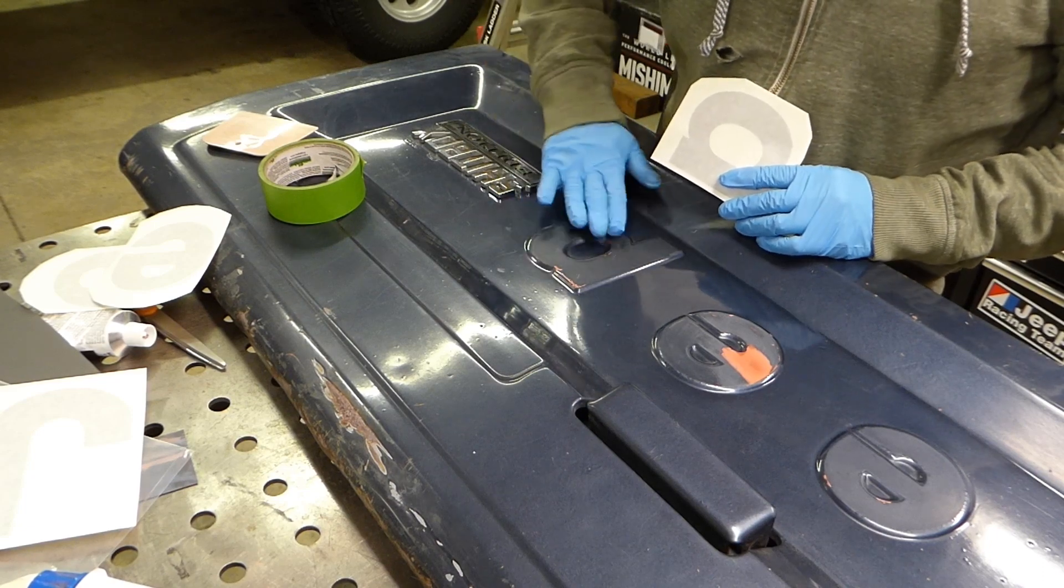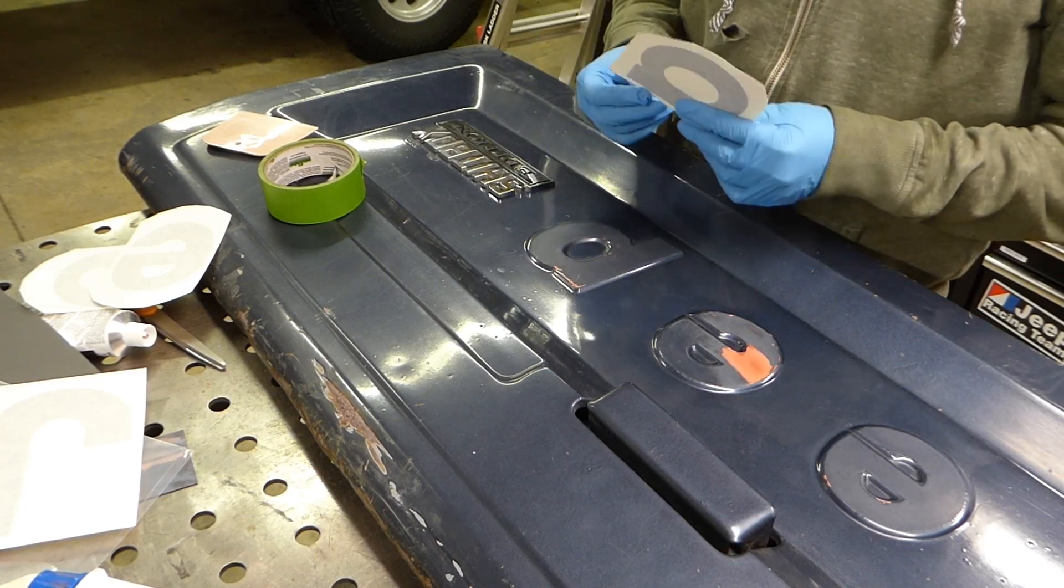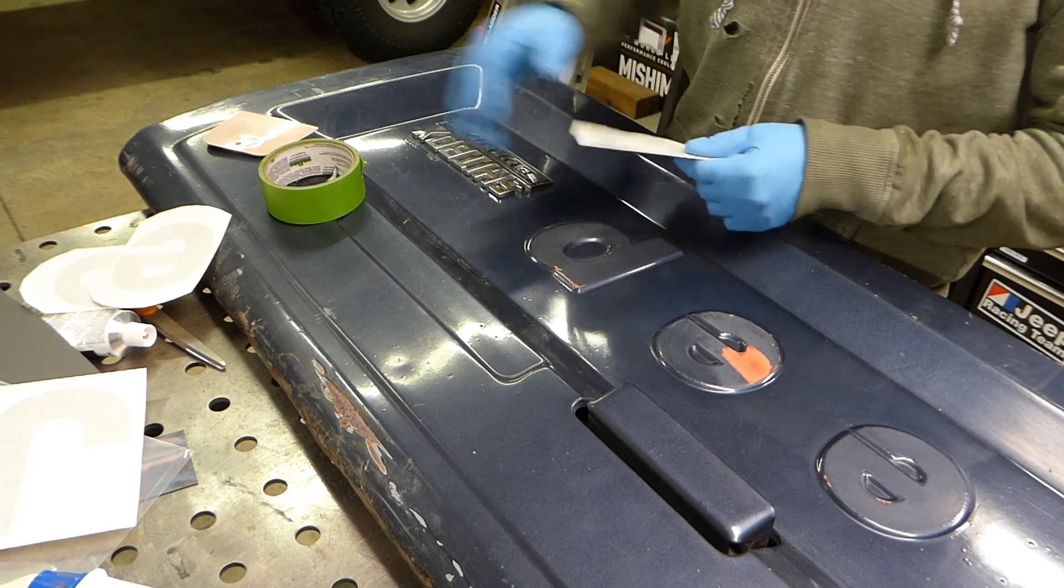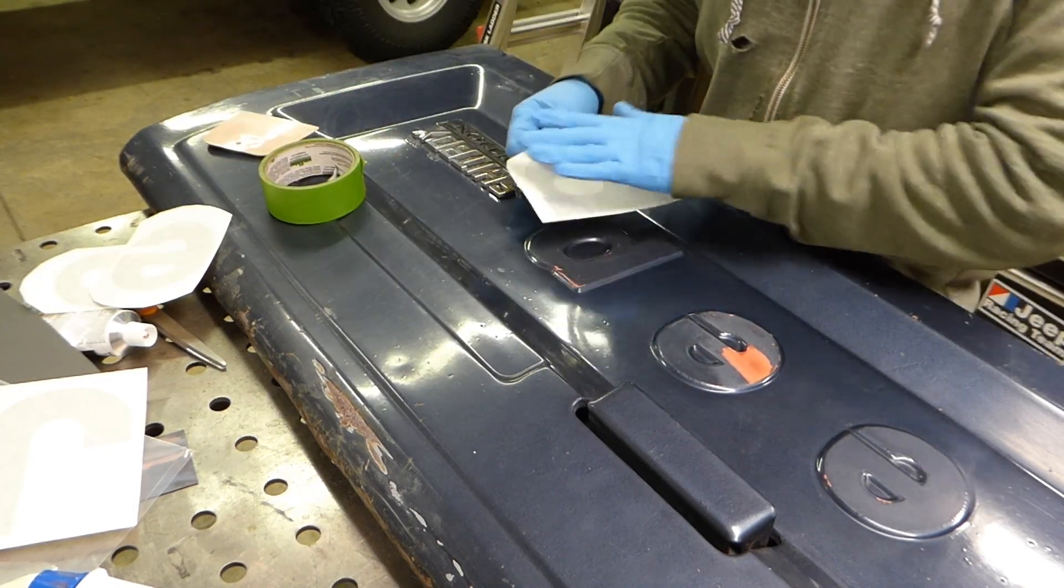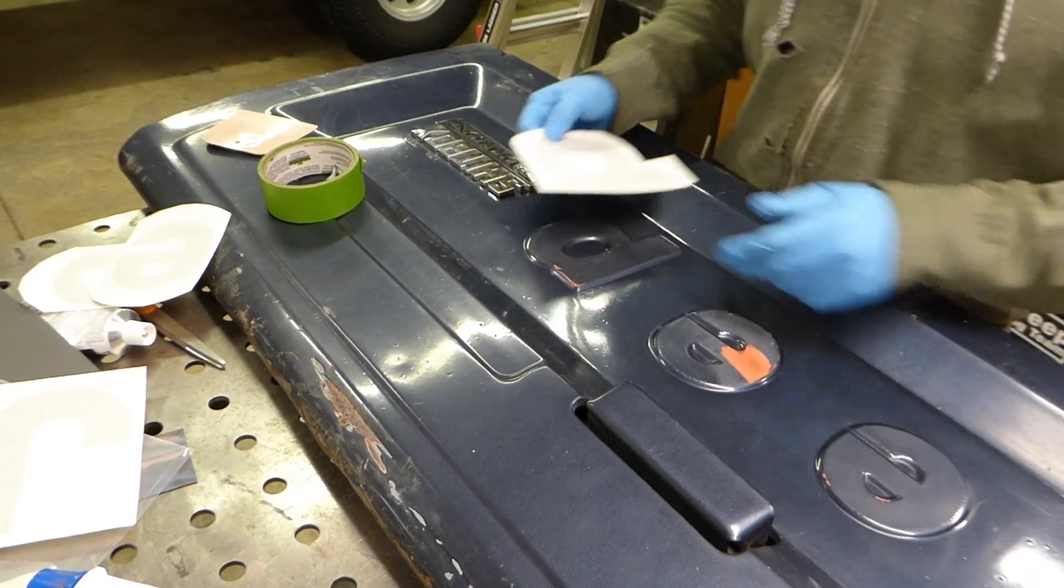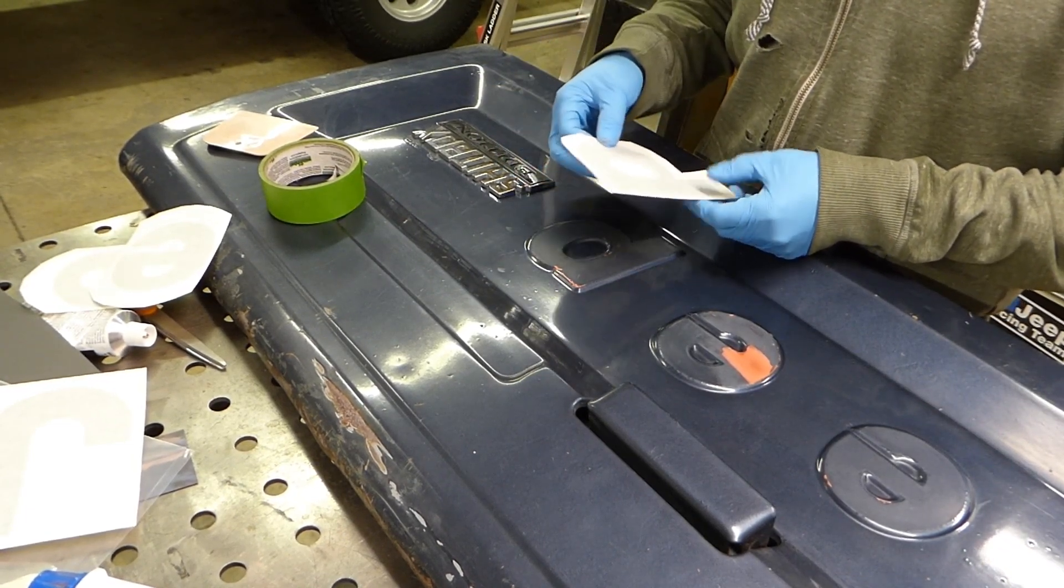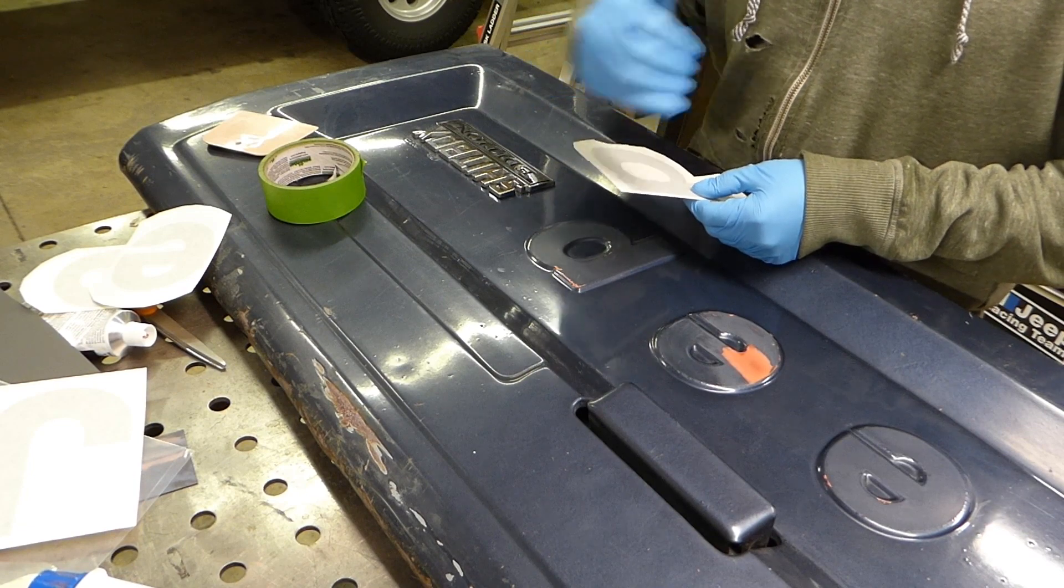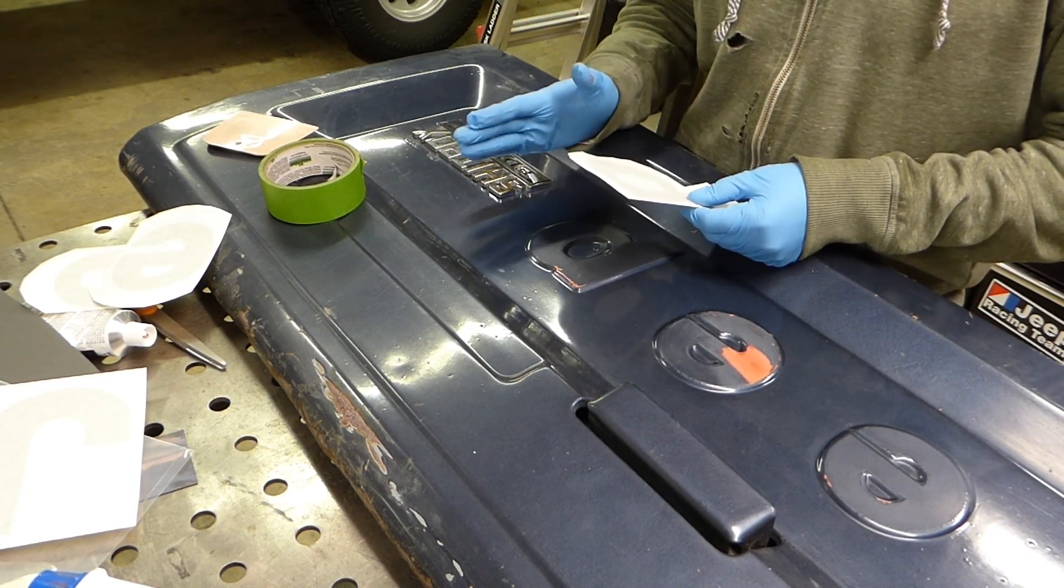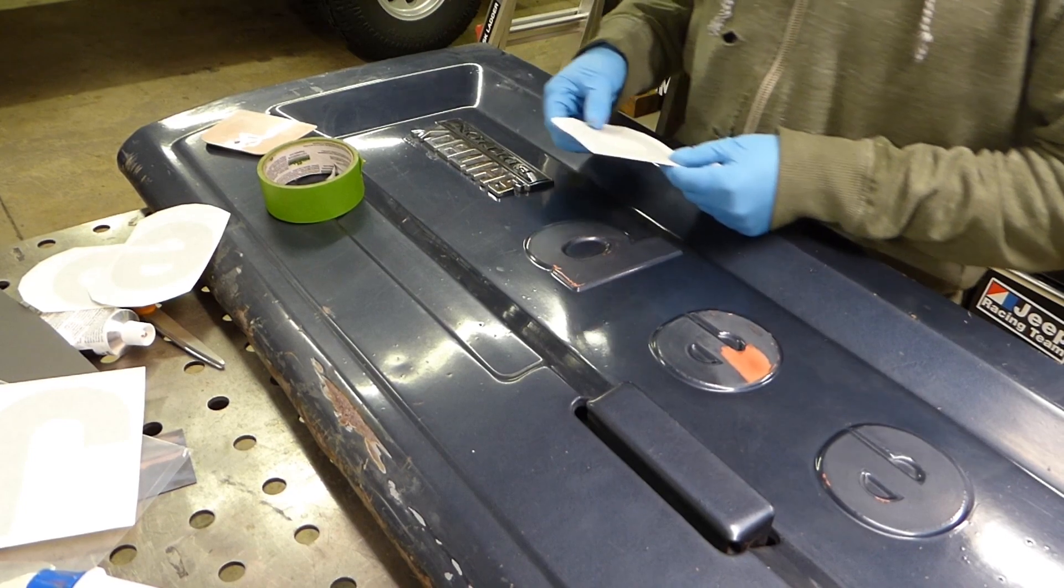All right, to start, I've already wiped this letter down, the P, with acetone. I've already cut out the individual letter as well. Not that this particular decal is meant to go on all as one piece, but if you're putting on vinyl and it's multiple pieces, sometimes it's easier to cut out those smaller pieces and apply them on individually than try to do the whole thing all at once.